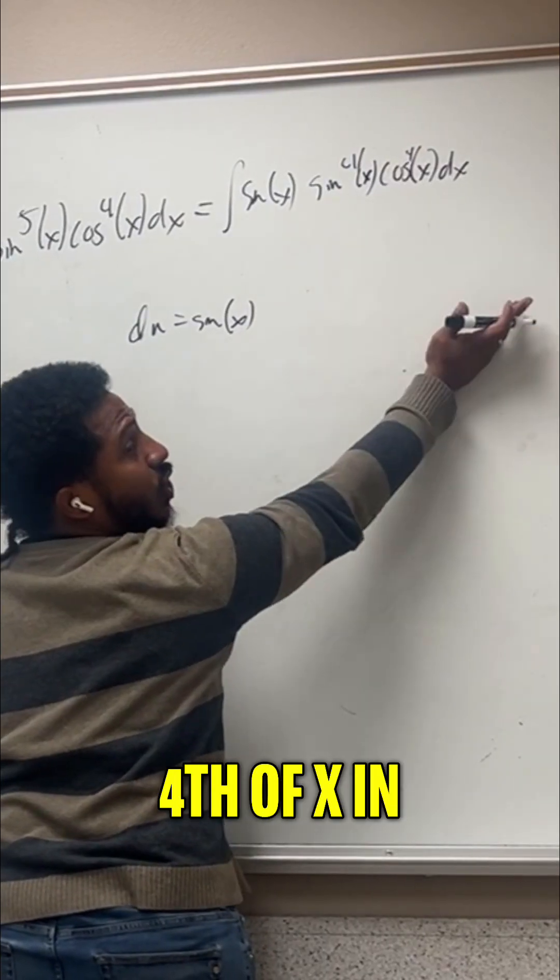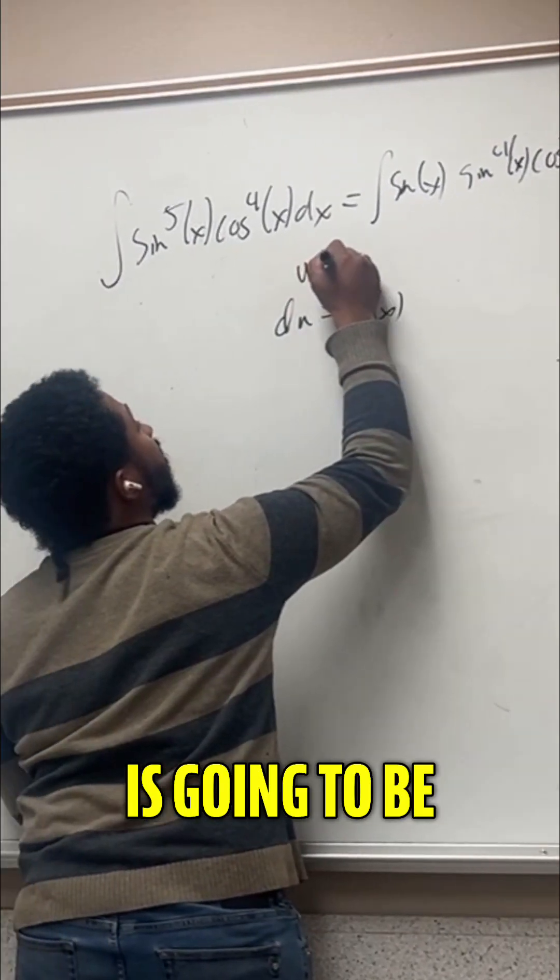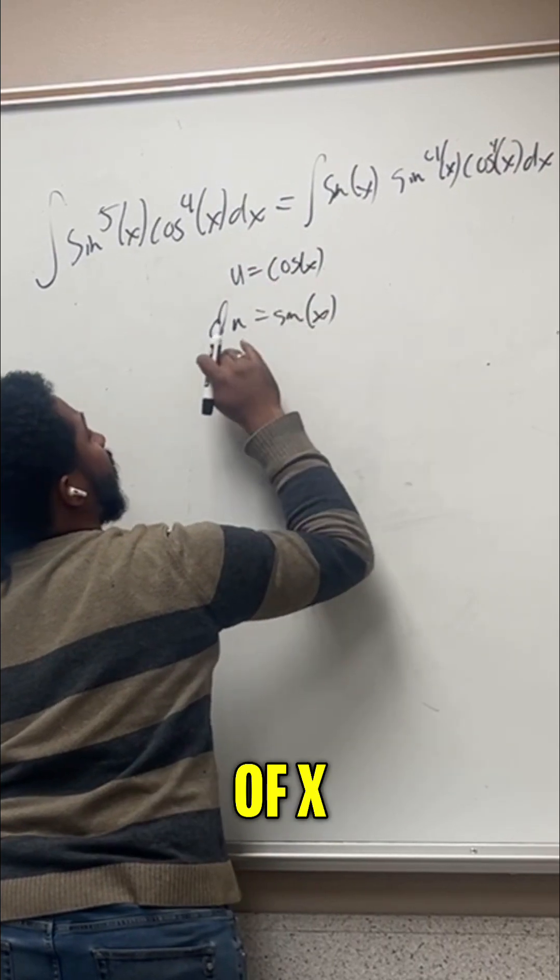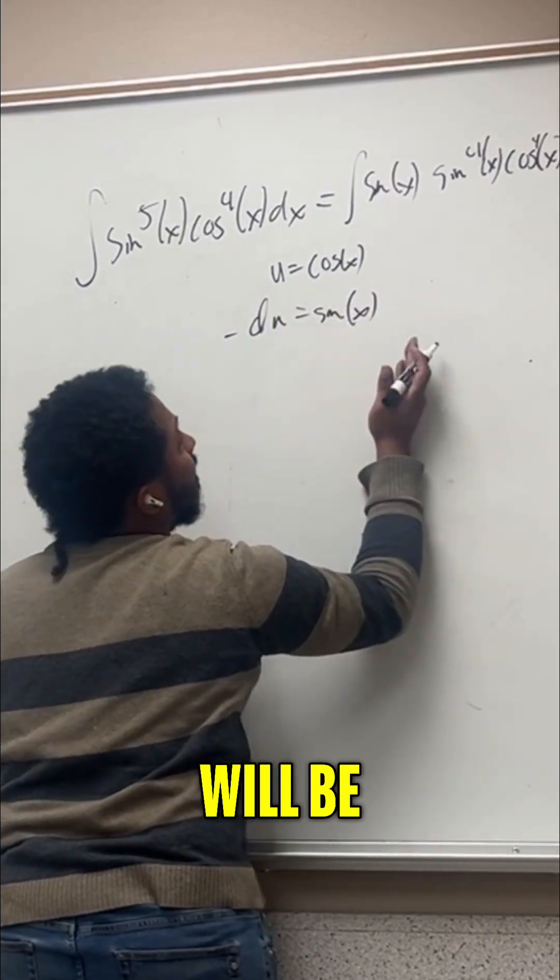We'll have to rewrite this sine to the fourth of x in terms of u because we know u is going to be the cosine of x. So if u is cosine of x, of course du will be negative sine of x dx.